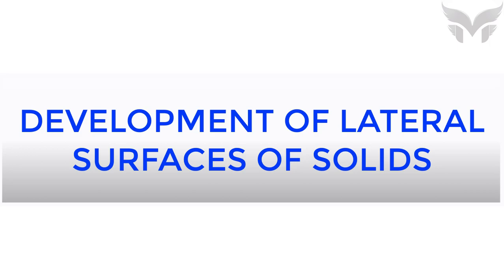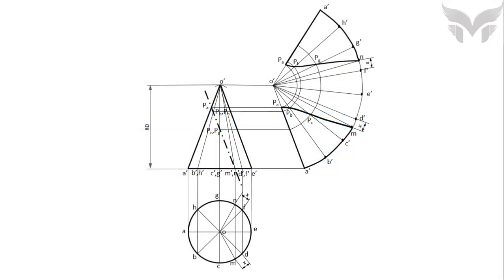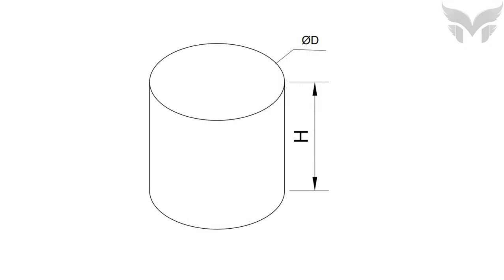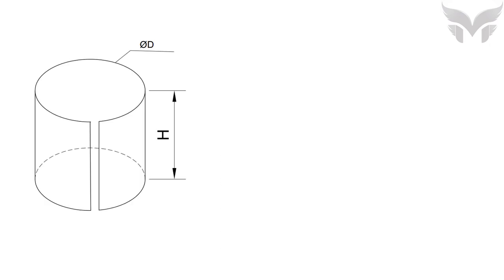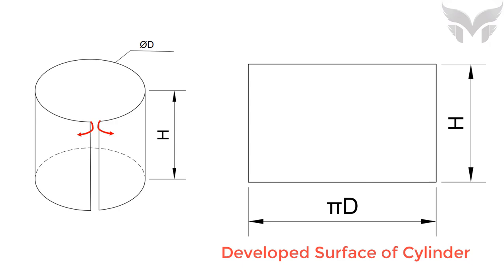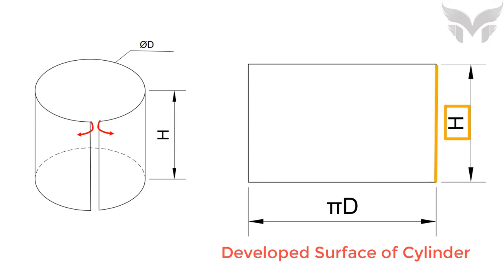Hello everyone. In today's video, we will be looking at how to draw the development of lateral surfaces of solids. Development is nothing but the unfolding of the lateral surfaces of a solid. For example, if we cut a hollow cylinder with a base diameter of 50 mm and axis height of 100 mm along its axis and unfold it, the developed surface looks like a rectangle with length equal to the circumference and breadth equal to the height of the cylinder.